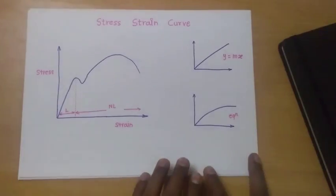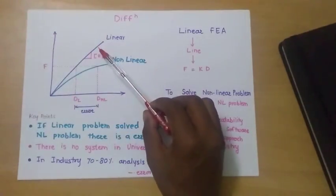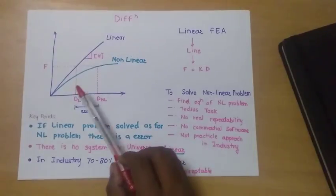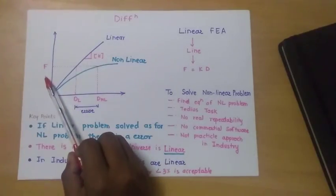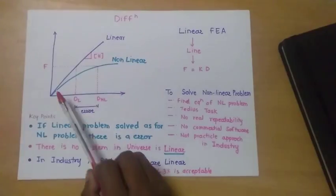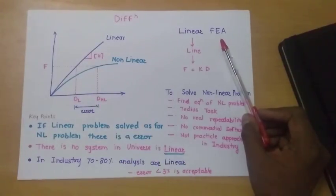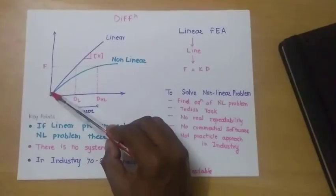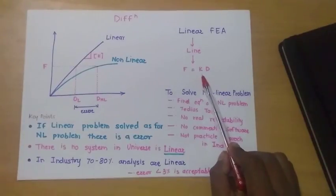Some materials have an initially linear stress-strain curve and some have a nonlinear curve. Here we have drawn force versus deformation — as force increases, deformation also increases, derived from the stress-strain graph. For linear analysis, we find the line the material follows and write the equation: Force = Stiffness × Deformation, where k (the stiffness matrix) behaves as the slope.